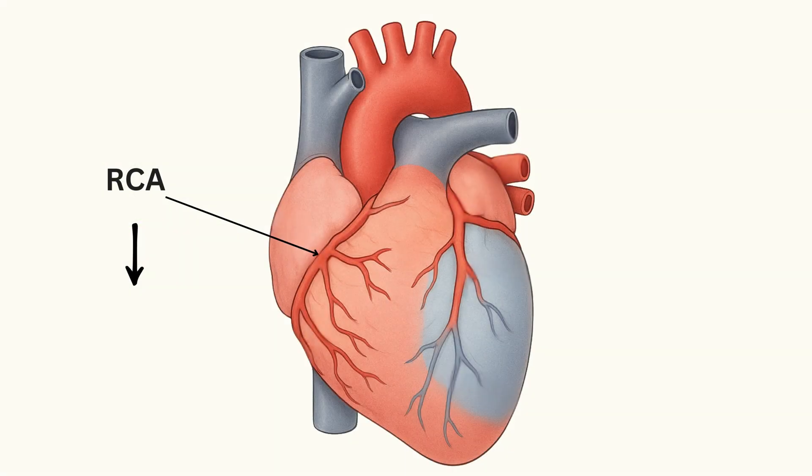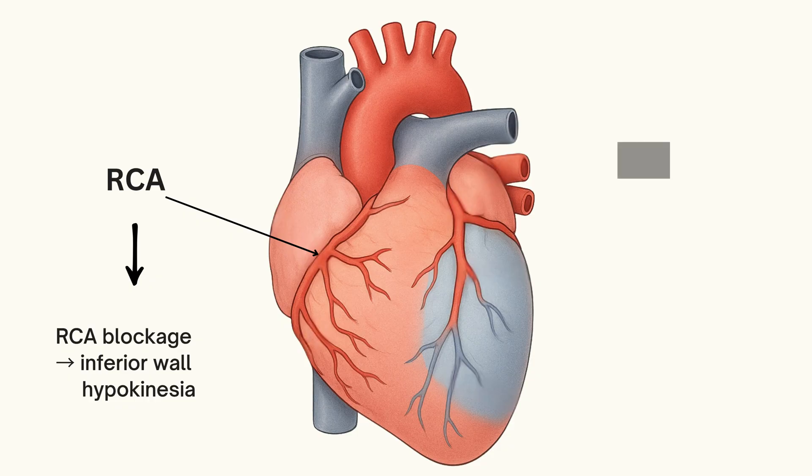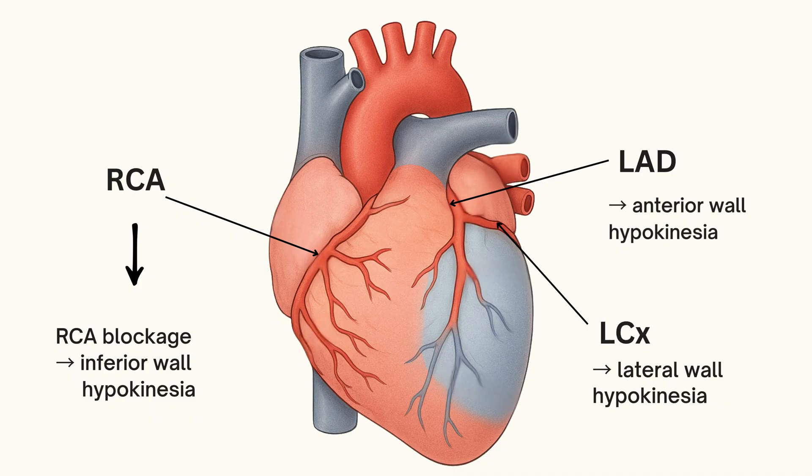For example, if there is RCA blockage, you can see inferior wall hypokinesia or akinesia on the 2D echo. If there is LAD block, there will be anterior wall hypokinesia. And if LCX blockage, obviously the lateral wall hypokinesia.